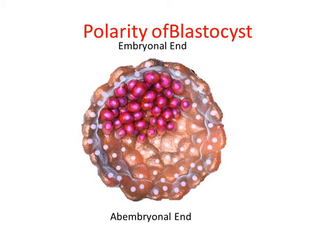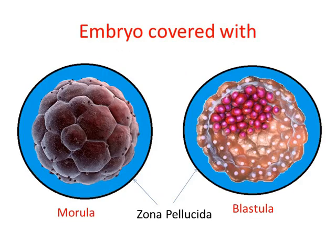By the end of the 7th day, the blastocyst is fully formed. It is now ready for implantation and gastrulation. The function of zona pellucida is to prevent the implantation of the embryo at an abnormal site. It does not expose the sticky and phagocytic trophoblast cells until it reaches the implantation site, that is within the uterus.